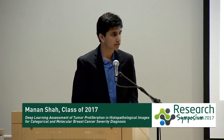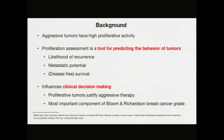Breast cancer is the most common cancer in women worldwide, with over 1.7 million new cases diagnosed each year. Current methods of assessing breast cancer are extremely problematic, primarily because the pathologists that currently assess breast cancer from histology slides are over 25% inaccurate. Tumor proliferation is an important biomarker indicative of breast cancer patients' prognosis, and the accurate and efficient assessment of this biomarker is critical to develop proper patient treatment plans.